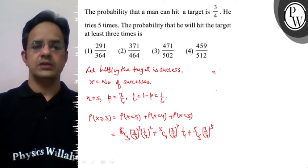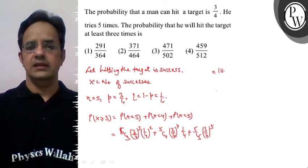Now, substitute values. 5C3 is 10 and it is multiplied with 27/1024.